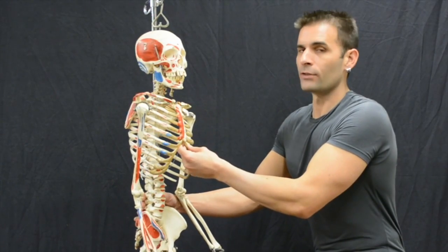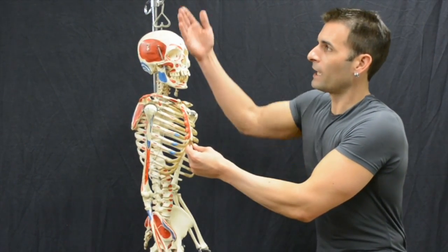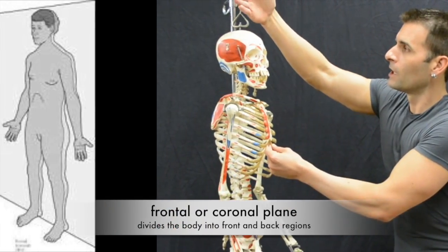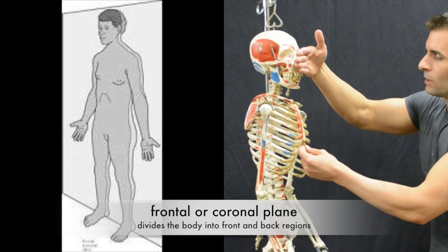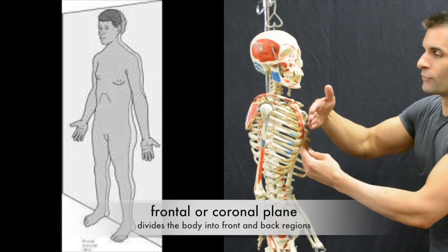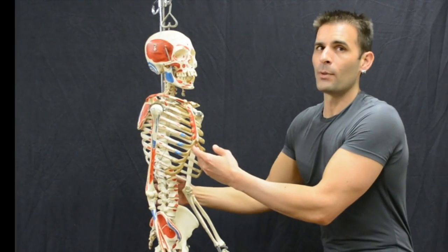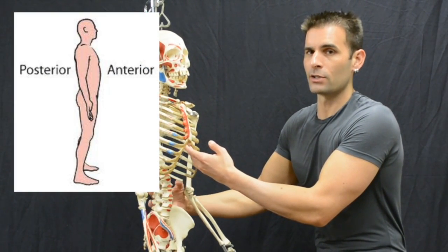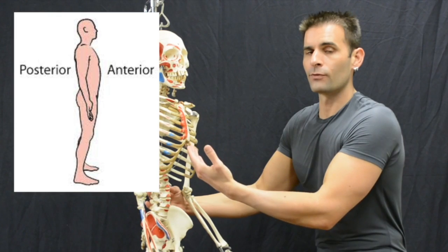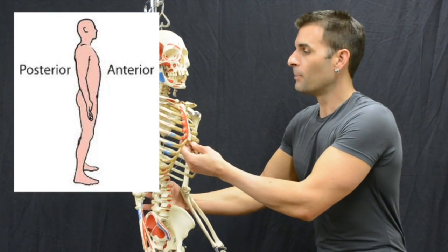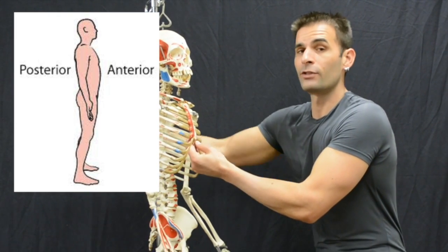If we turn the body sideways a little bit and we were to take a cut and create a plane coming from the coronal suture, cutting the body into front and back halves, we would have what is known as anterior and posterior sections. Anterior section is referred to as the front. The posterior section is referenced to the back.